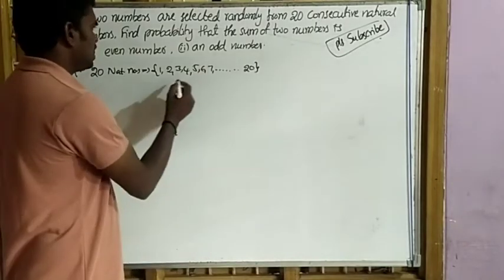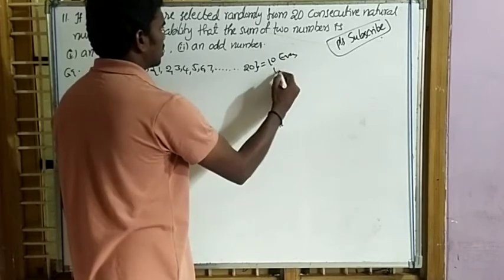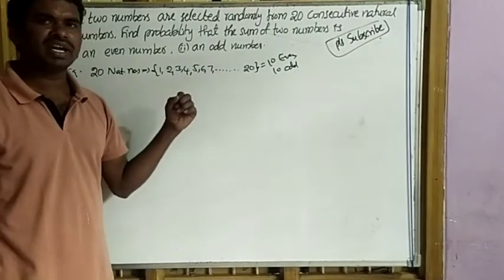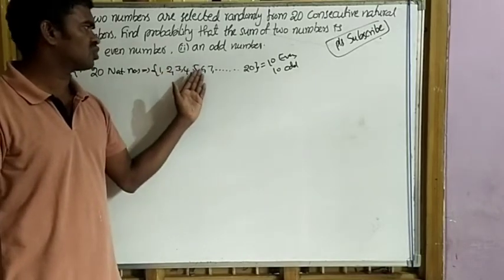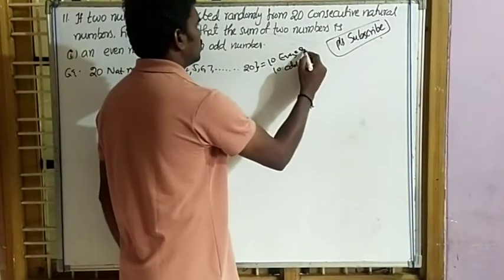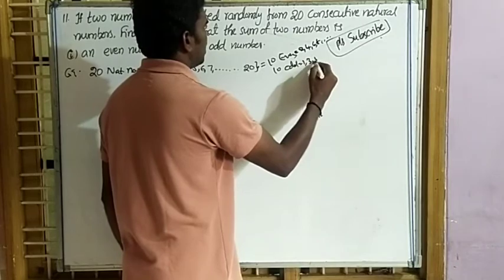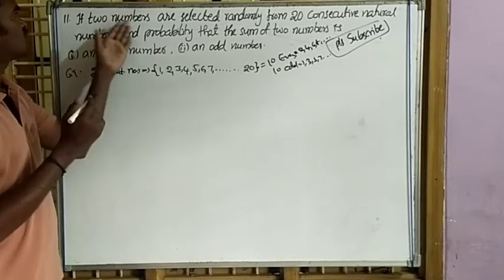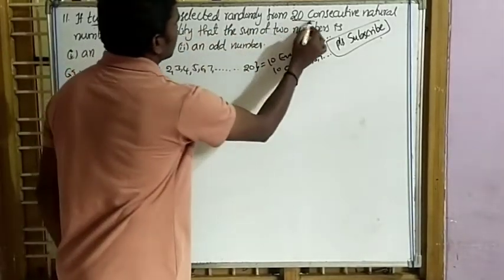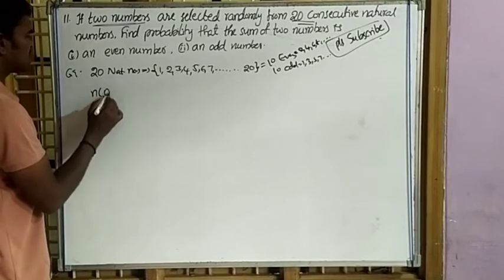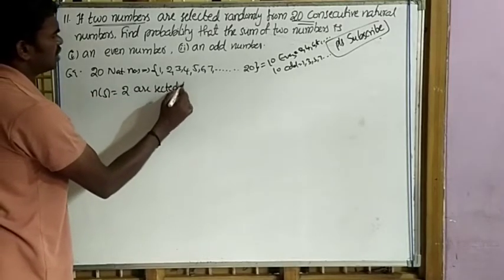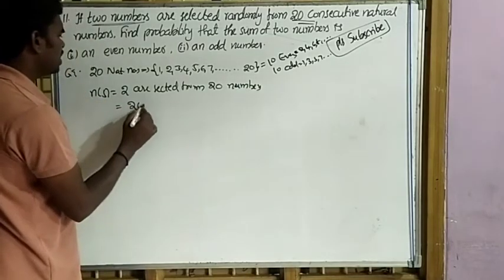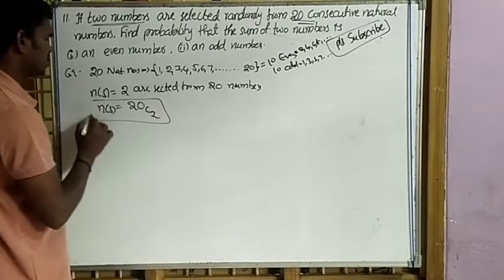In these 20 natural numbers, there are 10 even numbers (2, 4, 6, 8, ...) and 10 odd numbers (1, 3, 5, 7, ...). Two numbers are selected from 20, so N(S) = 20C2. First sub-question: the sum of the two numbers is even. Adding two even numbers gives even; adding two odd numbers also gives even.